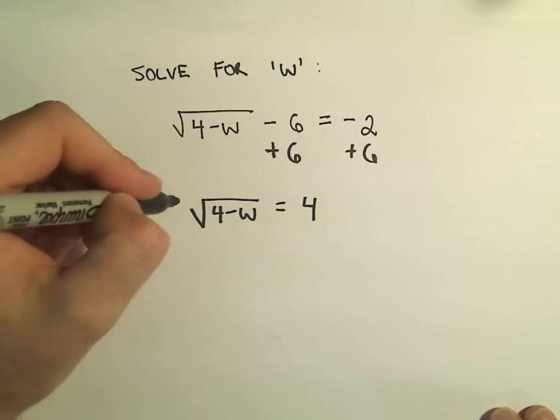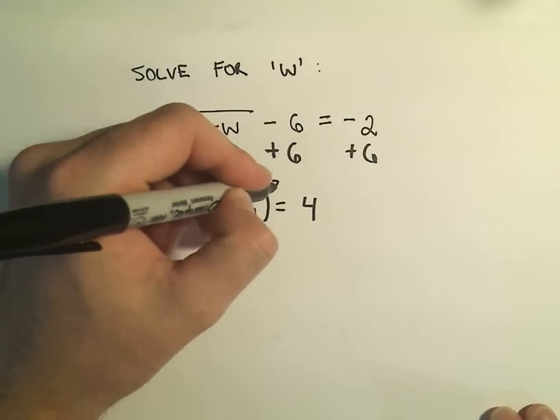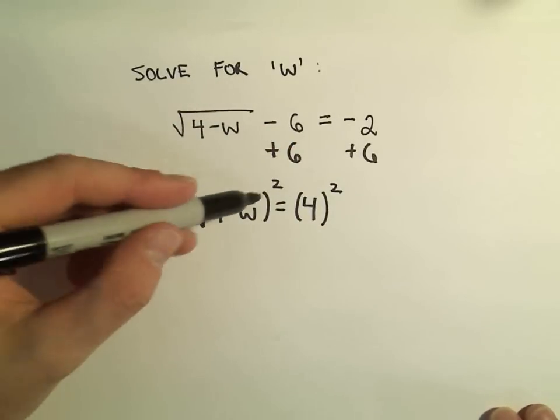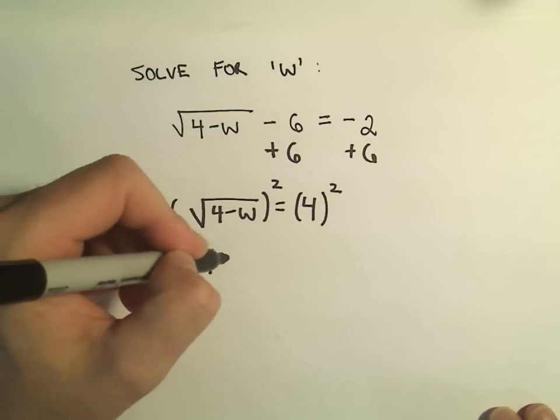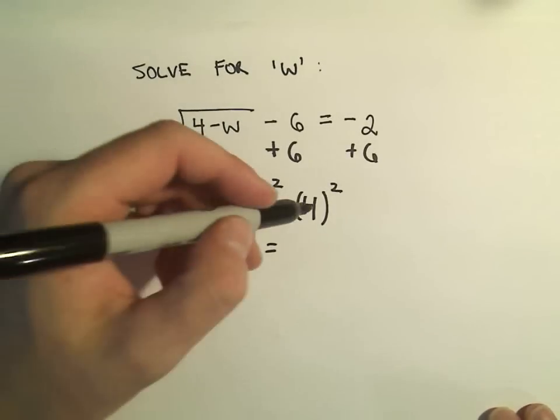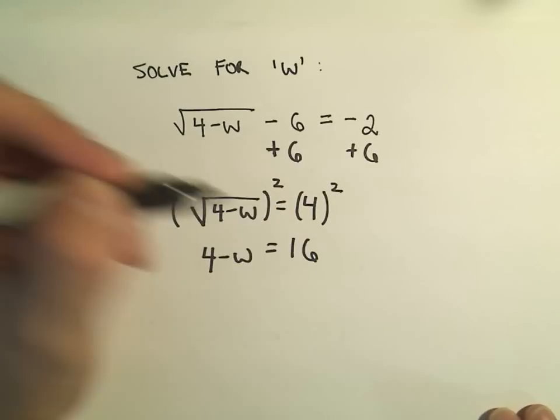And now, again, to get rid of the square root I simply square both sides. If I square the square root of 4 minus w, I'm just left with 4 minus w. And on the right side, 4 squared is going to give me 16.